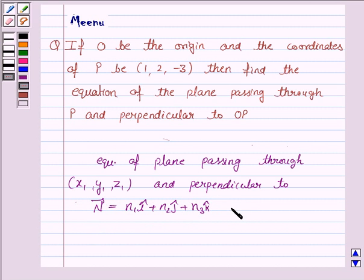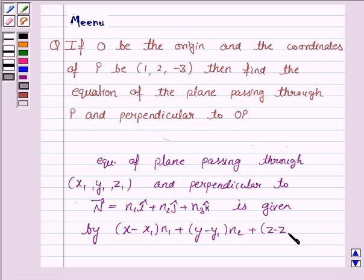is given by (X - X1)N1 + (Y - Y1)N2 + (Z - Z1)N3 = 0. So this knowledge will work as the key idea behind this question.